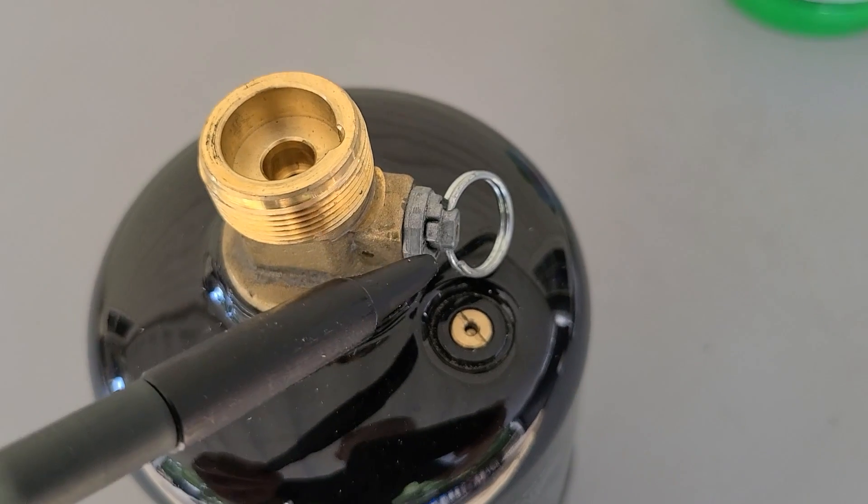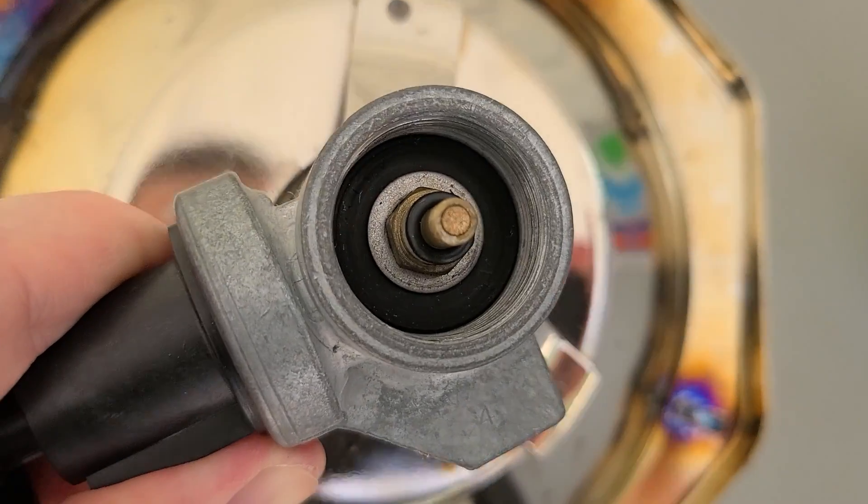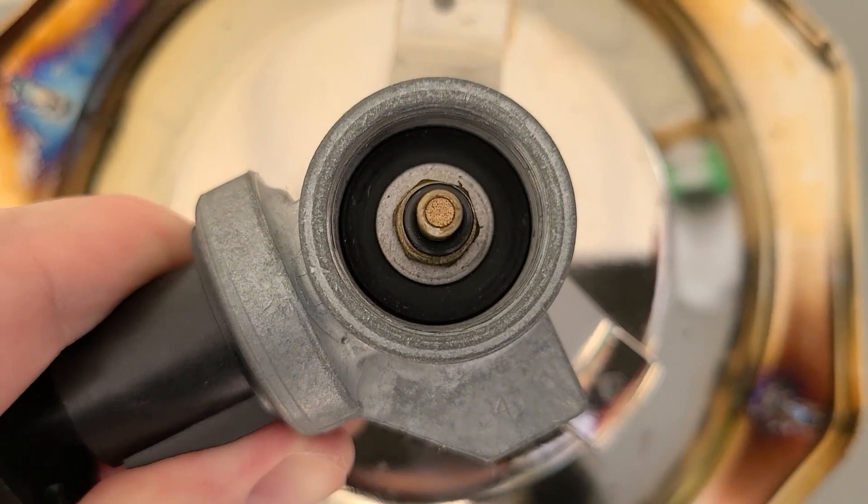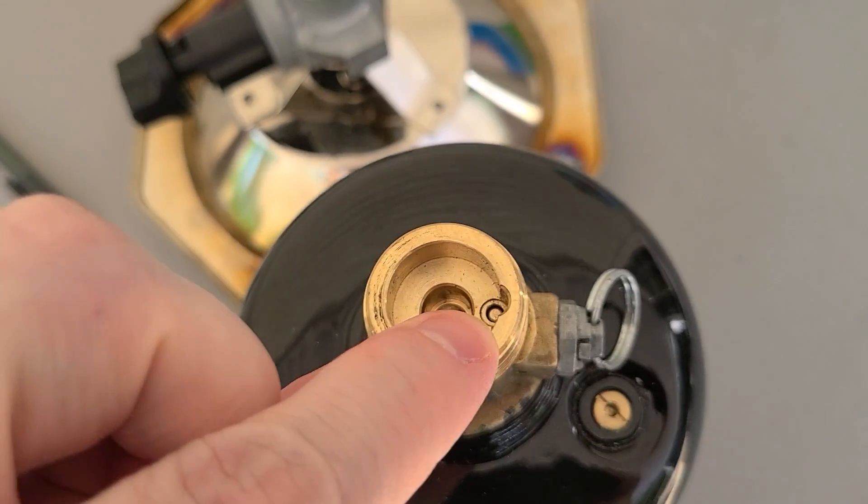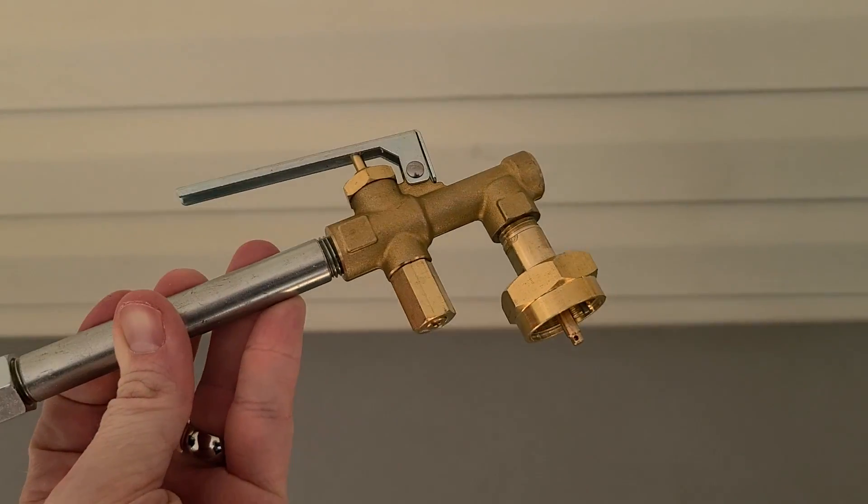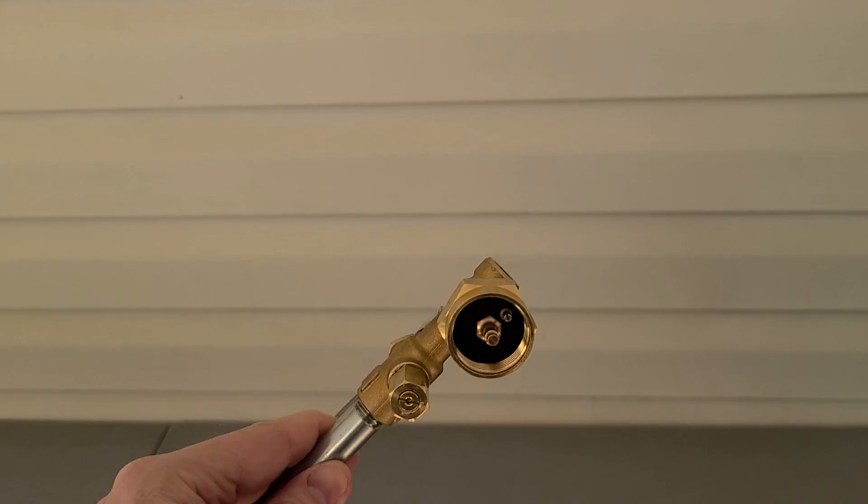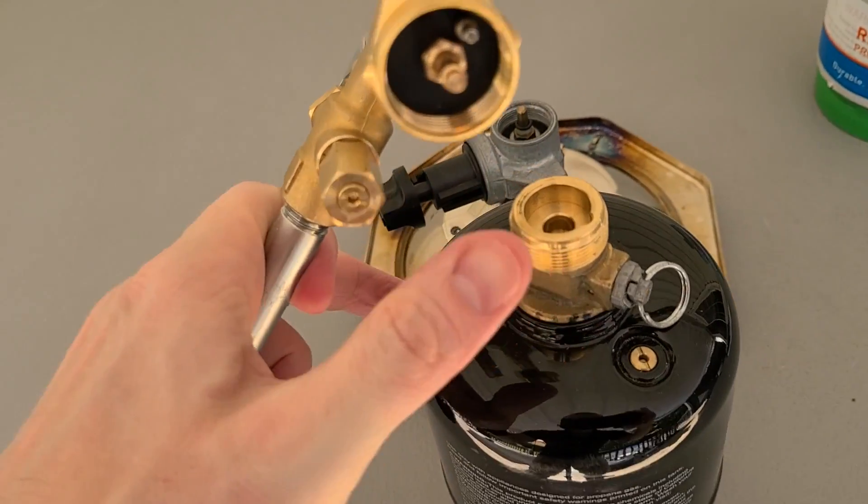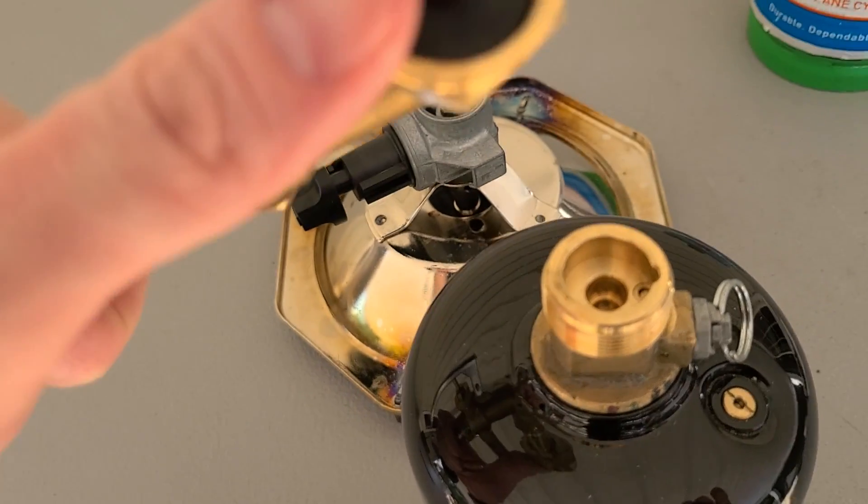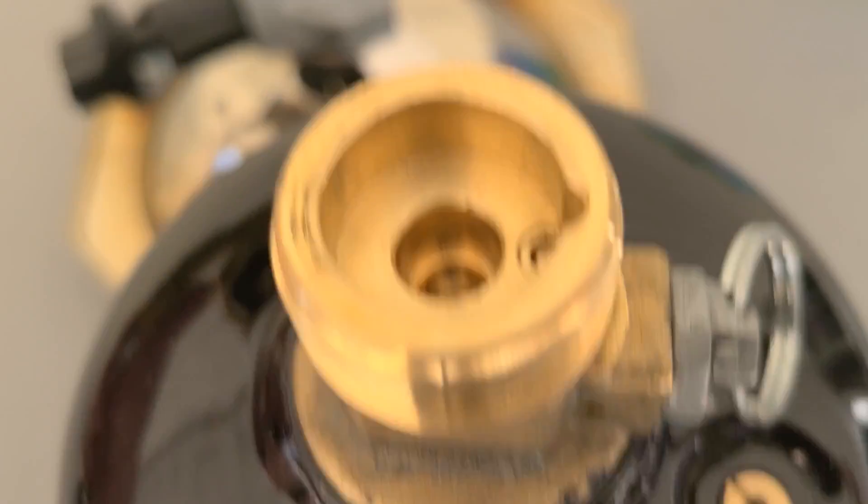So you can see with the camp stove, there's nothing that's going to push that pin down. But with the refill kit, you have to get the Fuel Keg refill kit in order to refill these. And the reason is that this is specifically designed to push that pin down. It has this little metal pin right here and that's going to go down into that slot.